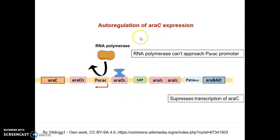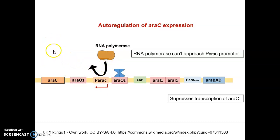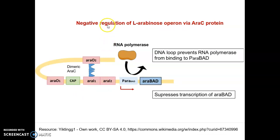Coming to the auto-regulation of araC: araC expression is regulated by its own protein. When levels of araC are high, araC goes and binds to the operator araO1, acting as a repressor and preventing RNA polymerase from binding to its promoter. Once RNA polymerase cannot bind, the araC gene cannot be transcribed or translated, so araC levels return to normal. This is how araC gene expression is regulated by its own protein.